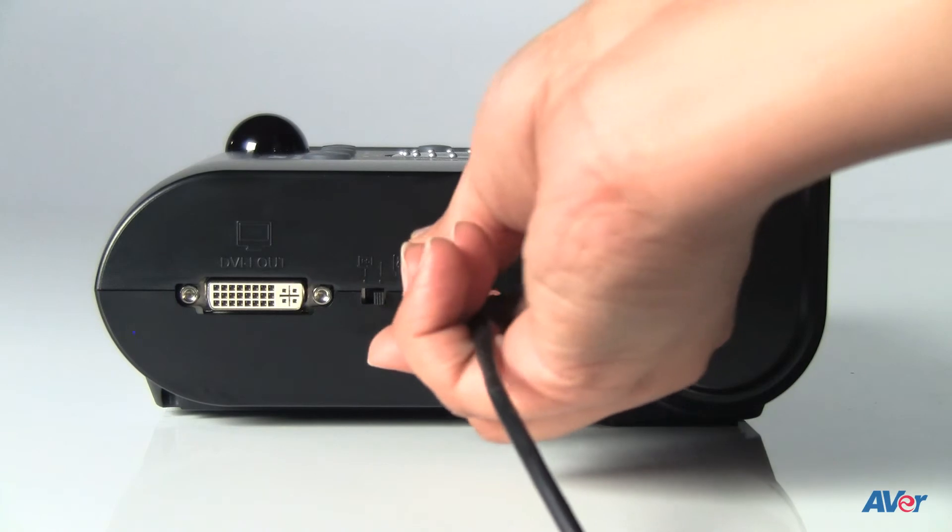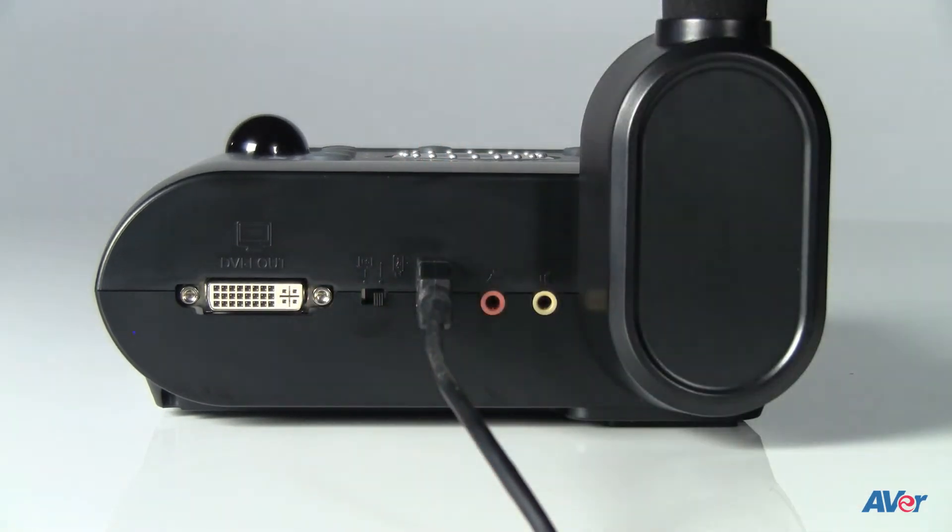The Avivision F50 document camera allows you to directly annotate onto a captured image without needing an additional computer or software. Simply capture an image, play it back, and plug in a USB mouse directly to your document camera. The port is on the side.